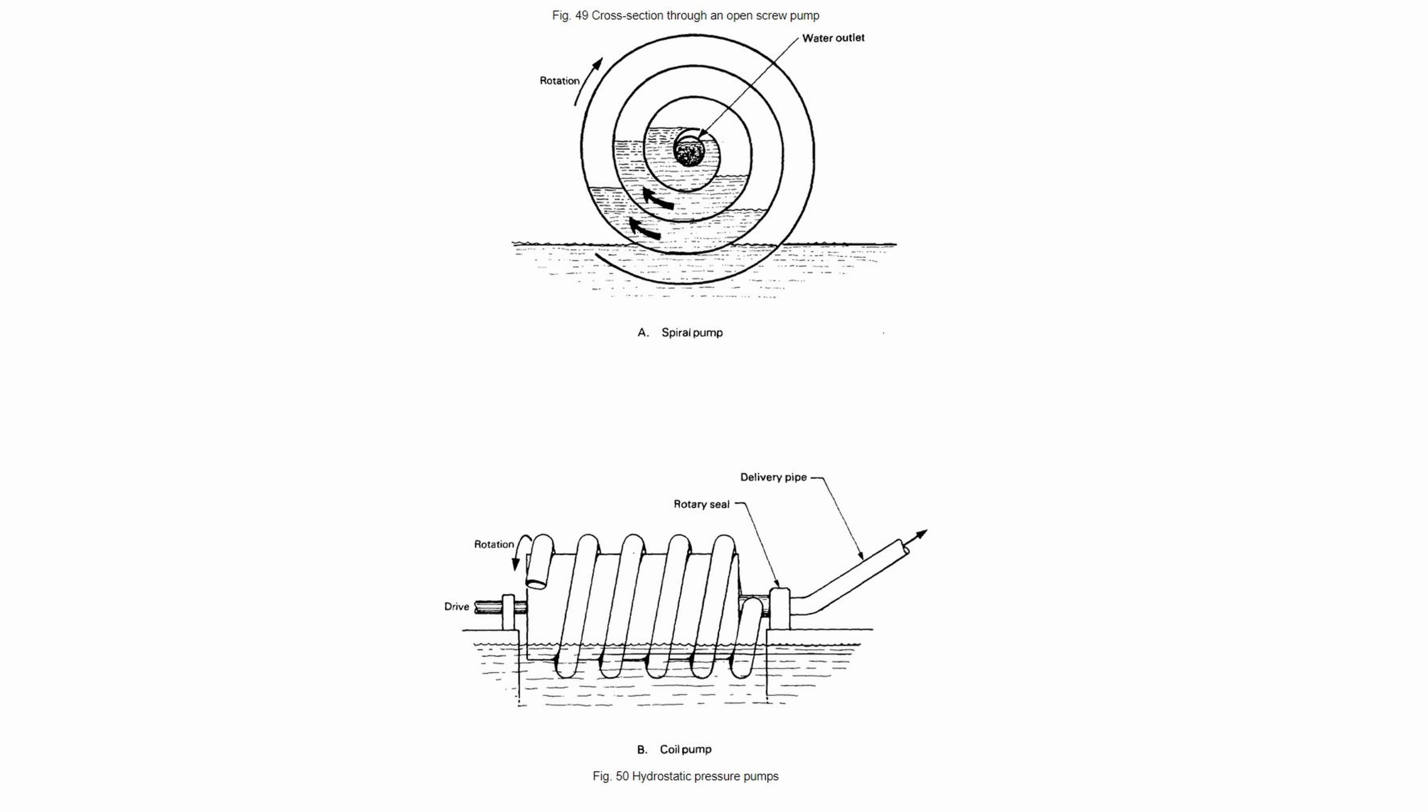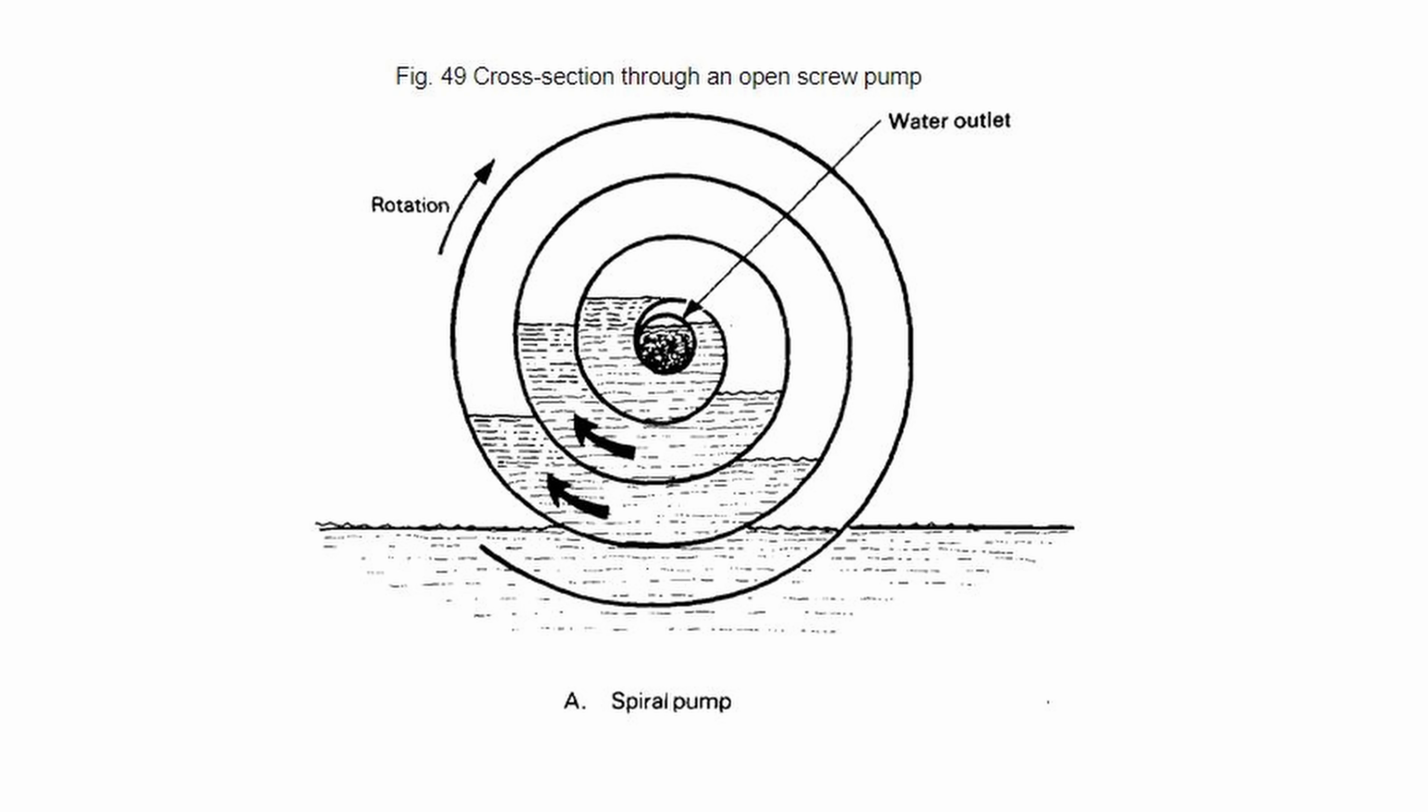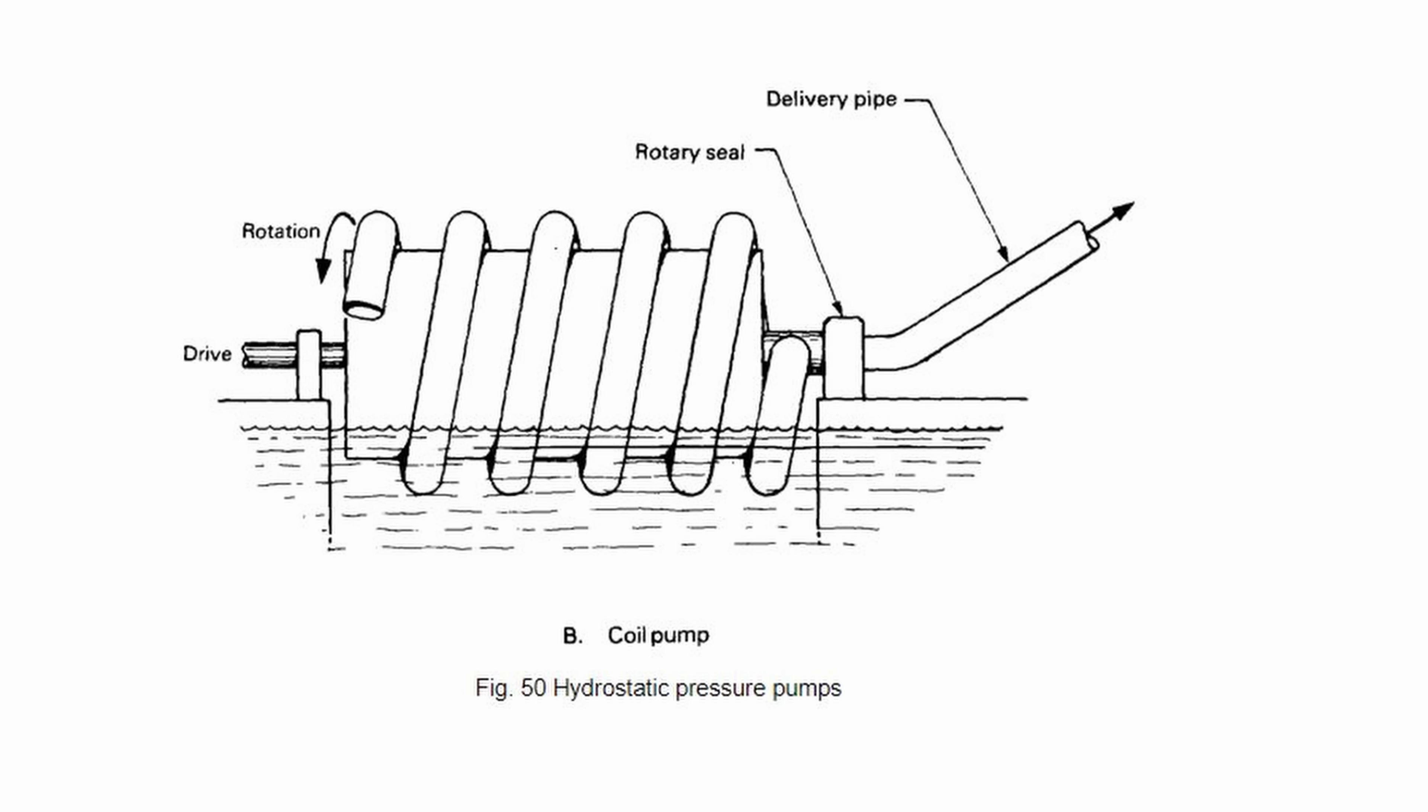While reading up on the spiral pump I learned that there's another variant called the coil pump. Both the spiral pump and coil pump operate in pretty much the same way. The only difference is the spiral pump spirals the tubing inwards towards the outlet where the coil pump just kind of coils it up.